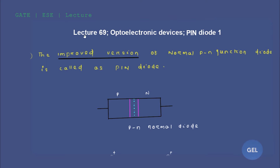Welcome to GATE ESC lecture number 69 of EDC. This is the fourth module on optoelectronic devices. Now we are getting into the concept of the PIN diode. Basically, a normal diode has a p-type, an n-type, a depletion layer, and a junction — that is a normal p-n junction diode.